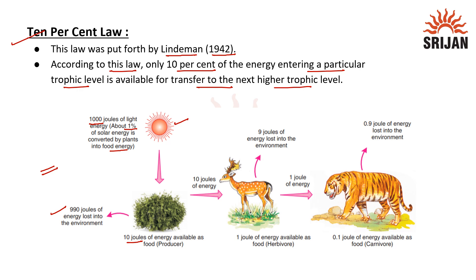Now, this 10 joules of energy is available as food for producers, out of which 10% — that is 1 joule of energy — could be transferred to the next trophic level and would be available for herbivores as food.